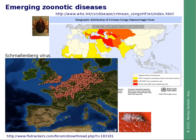The Schmallenberg virus causes, in its mild form, fever of short duration and reduced milk production in cows, and in the prolific form, stillbirth and birth defects in sheep, cattle, and goats — so it is an animal disease at this point. It is transmitted by Culicoides, that is midges.